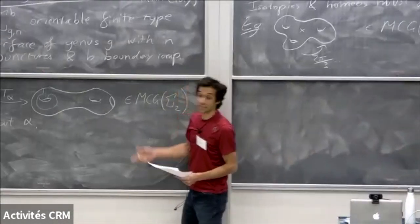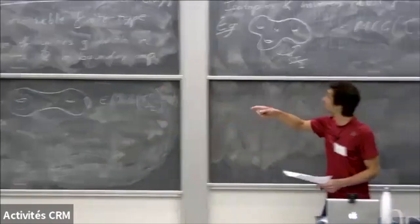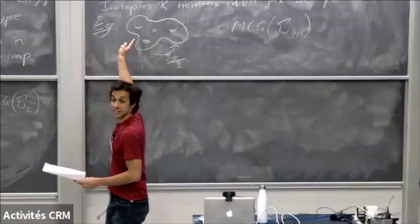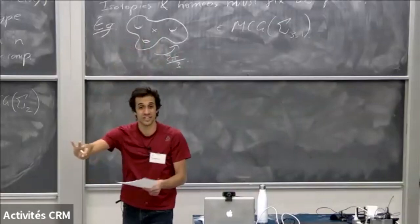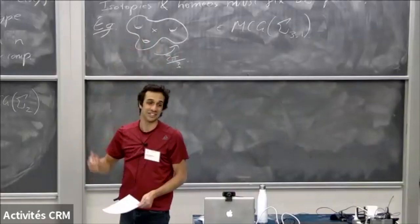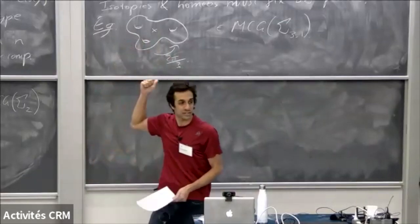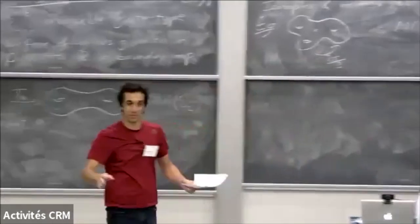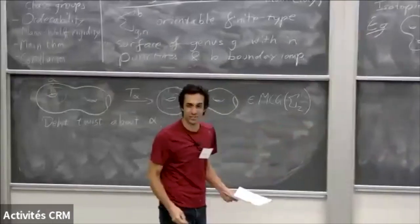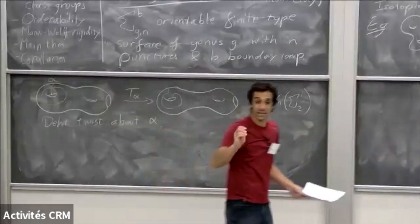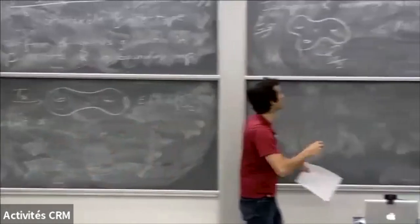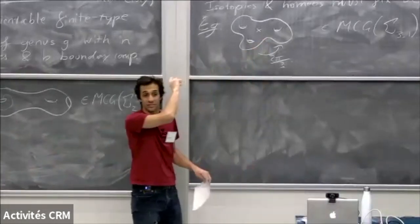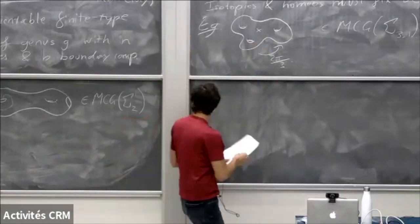It's kind of remarkable that mapping class groups are generated by Dehn twists, because you look at this homeomorphism here which is a very rigid finite order thing, and you think 'no way' — but you can decompose that as a product of Dehn twists. If you're bored already, which is pretty rough — this is a product of Dehn twists.